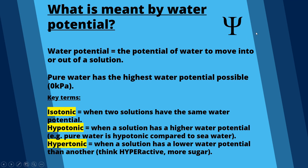The unit for water potential is kPa — kilopascals — and it's often given the symbol at the top right which is the Greek letter psi (ψ) from the Greek alphabet, and that symbol represents water potential.